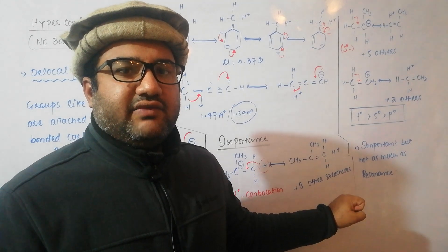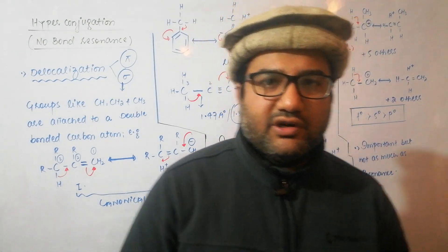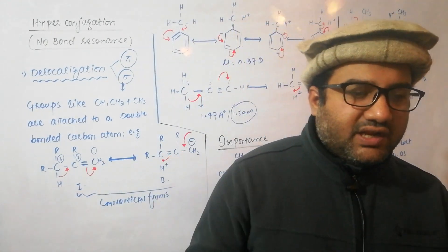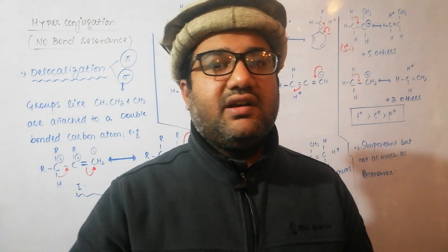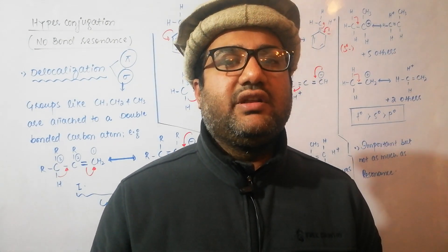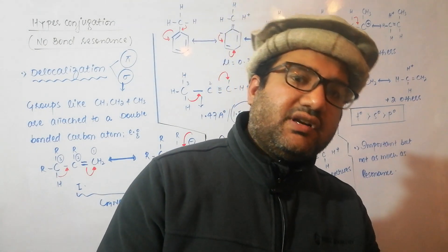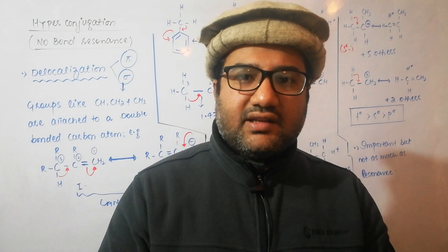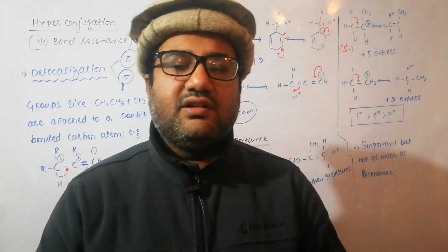Hyperconjugation is very important for explaining the stability of carbocations, which is crucial for studying mechanisms of organic reactions. Though hyperconjugation is not as important as resonance — which involves shifting of pi bonds and delocalization of pi electrons — it does not mean sigma electrons show no delocalization. Hyperconjugation explains why secondary carbocations prefer to rearrange to tertiary carbocations during reactions. This stability criteria plays a very important role in deciding the kinetics, the steps, the molecularity, and the pathway of any reaction.